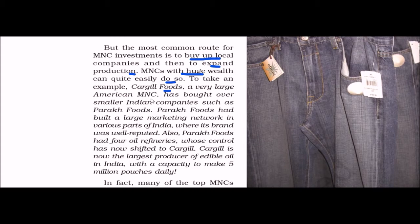Cargill Foods, a very large American MNC, has bought over smaller Indian companies such as Parakh Foods. Parakh Foods had a large built network across various parts of India where its brand was well reputed. Parakh Foods also owns 4 oil refineries whose control has now been shifted to Cargill Foods. Cargill is now the largest producer of edible oil in India, with the capacity to make 5 million pouches daily.